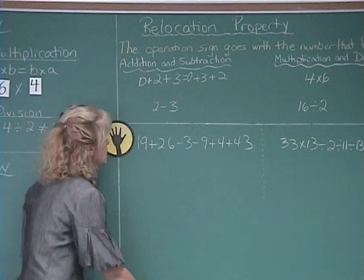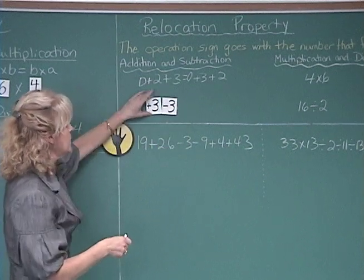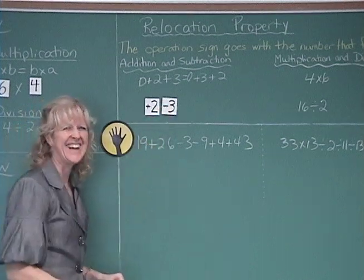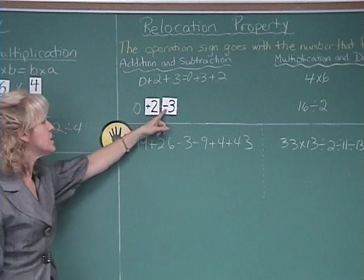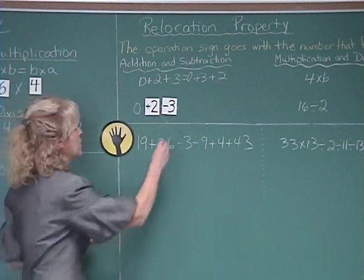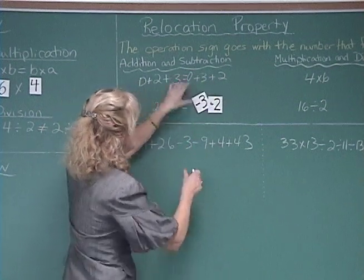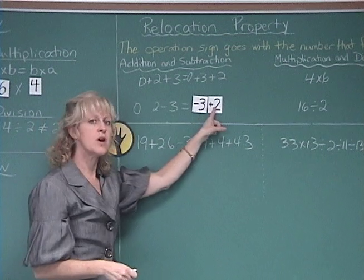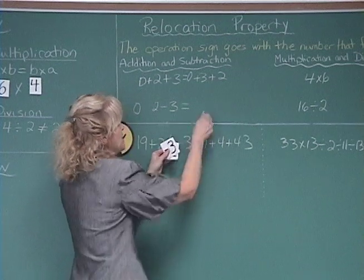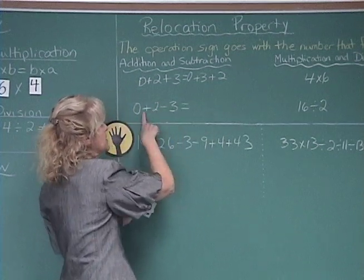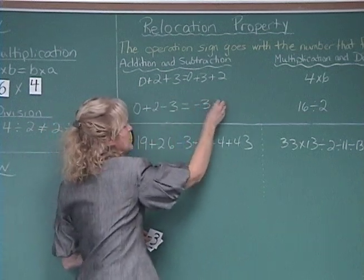This also works for subtraction. Notice here, you've got the 2 minus 3. Now, in this case, remember again, 0 plus 2 minus 3 is negative 1. So if you take that again, and you can switch these around so that you've got that equal to negative 3 plus 2, which is also equal to negative 1, because you're moving the sign with the number that follows it. So this is because of this identity element, 0 plus 2, and that would equal negative 3 plus 2.